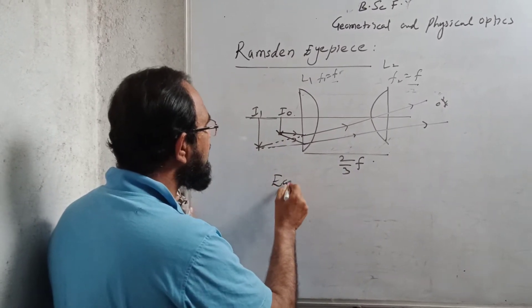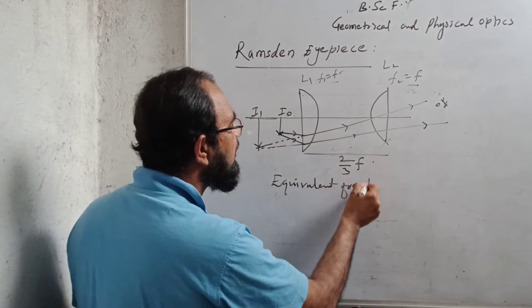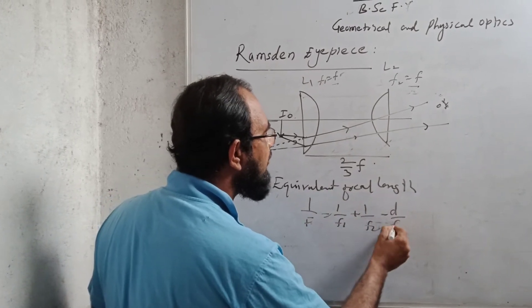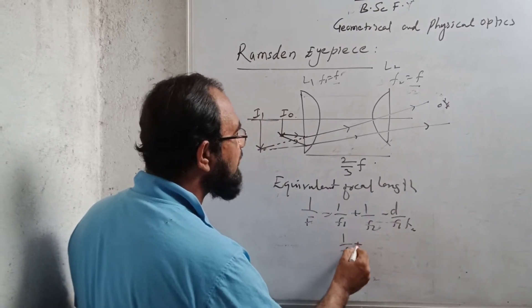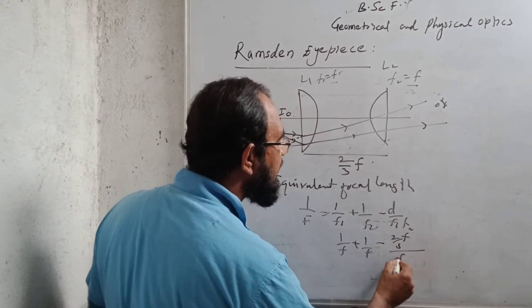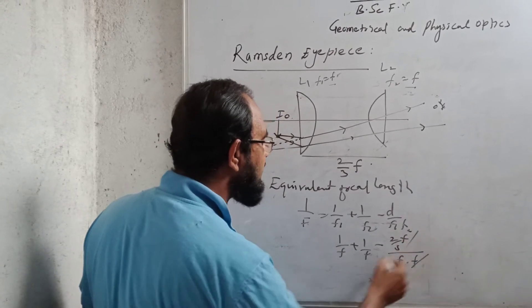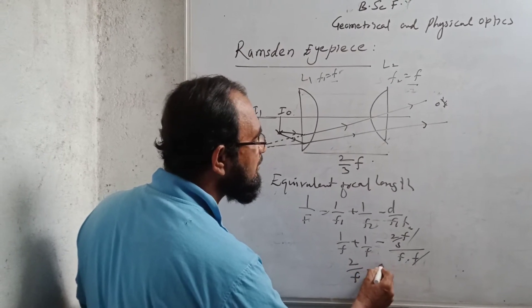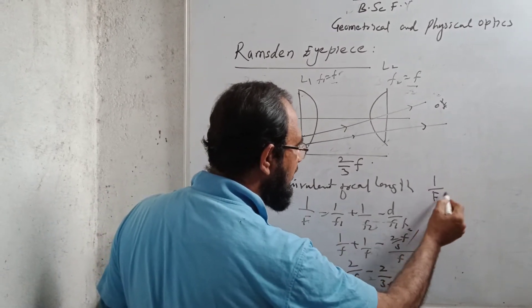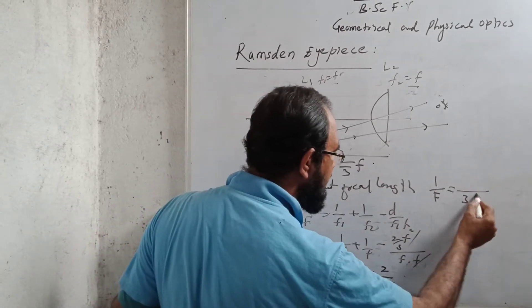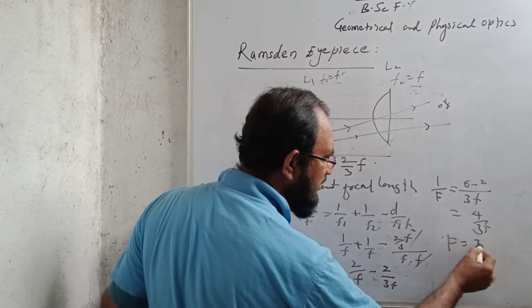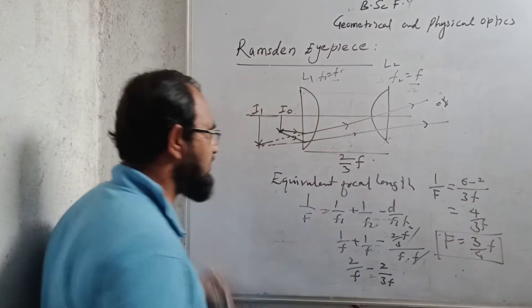Now let us find the equivalent focal length of this eyepiece. The formula is: 1/F = 1/f1 + 1/f2 − d/(f1·f2). Substituting the values: 1/f + 1/f − (2/3 f)/(f·f) = 2/f − 2/(3f). Taking LCM as 3f: (6 − 2)/(3f) = 4/(3f). Taking the reciprocal, the equivalent focal length F = 3f/4.